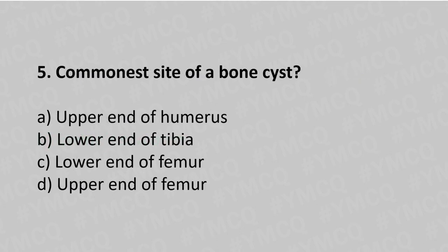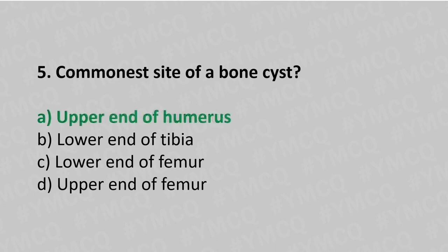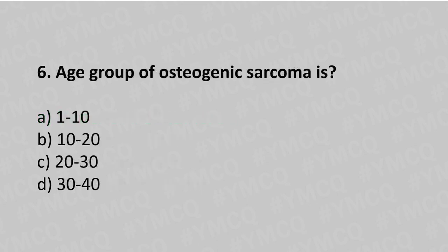Question number five: the most common site of osteogenic sarcoma is option A upper end of the humerus, option B lower end of the tibia, option C lower end of the femur, option D upper end of the femur. The answer is option A, upper end of the humerus.